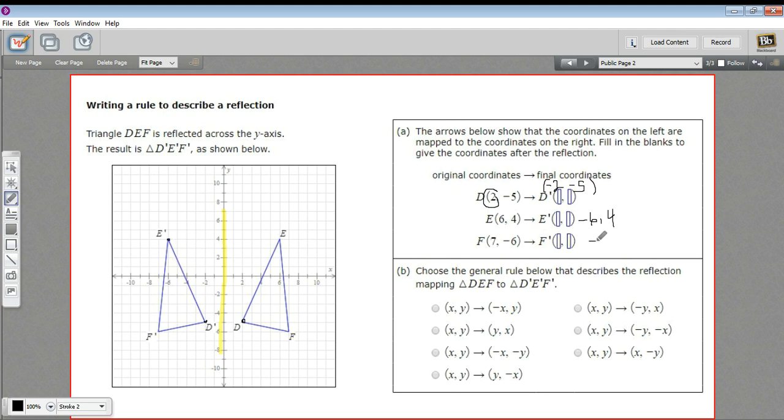And this should be negative 7, negative 6. Right here - yep, that is indeed negative 7, negative 6. So what we're doing is taking the x-coordinate and switching the sign, making it negative, and keeping the y-coordinate the way it is.